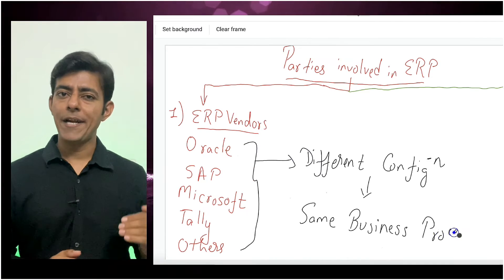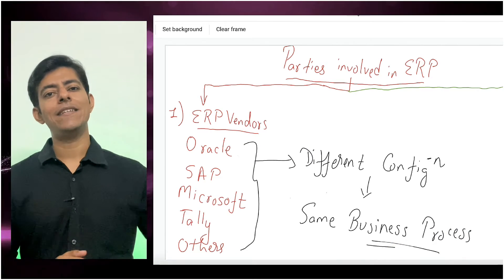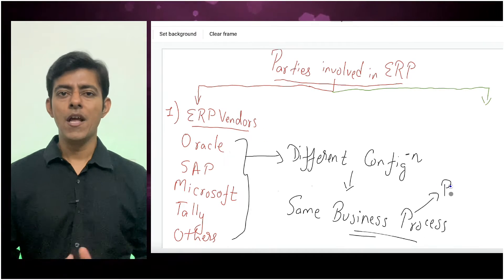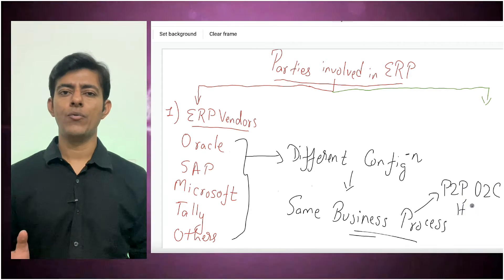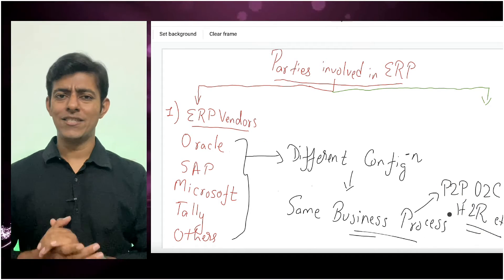The ERP might be different, but the business processes inside this ERP will be the same — like procure to pay, order to cash, hire to retire. These are all processes which will be the same across different ERPs. The vendors or sellers may be different, but the business processes will be same.